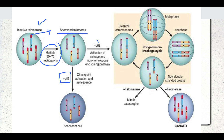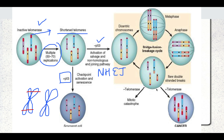If P53 is inactive in that cell, there is activation of the non-homologous end-joining pathway, or NHEJ pathway. When telomeres are shortened in a cell that lacks functional telomeres, the DNA is exposed — known as naked DNA — and DNA breaks are present. The ends become sticky and join with another chromosome to restore the length of the chromosome.